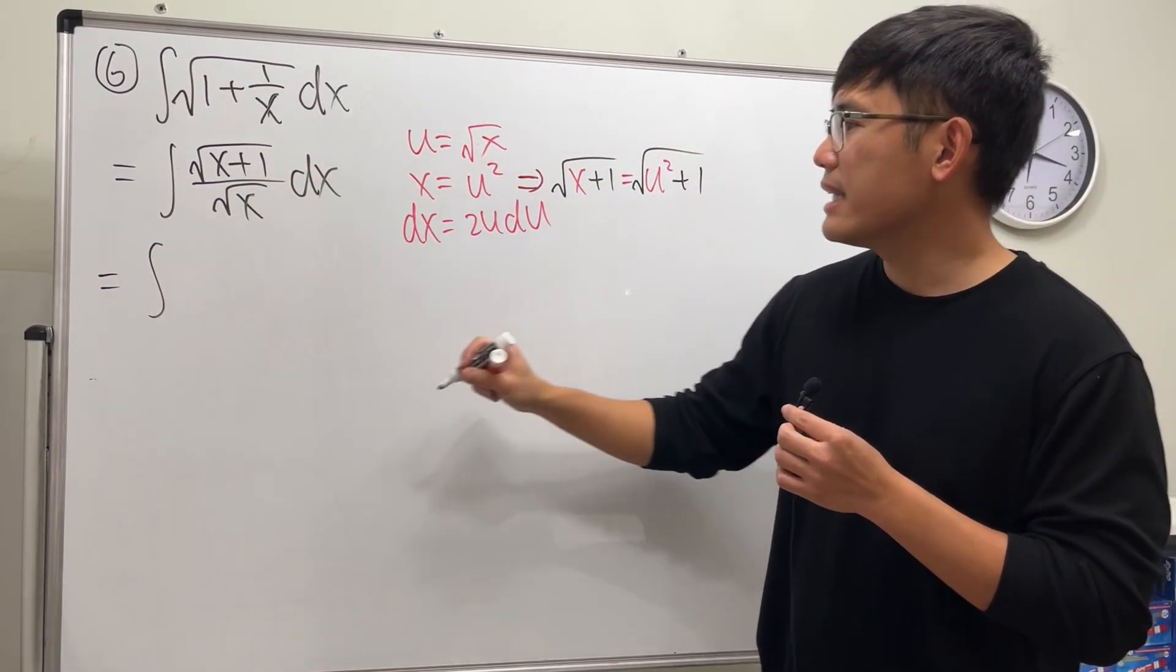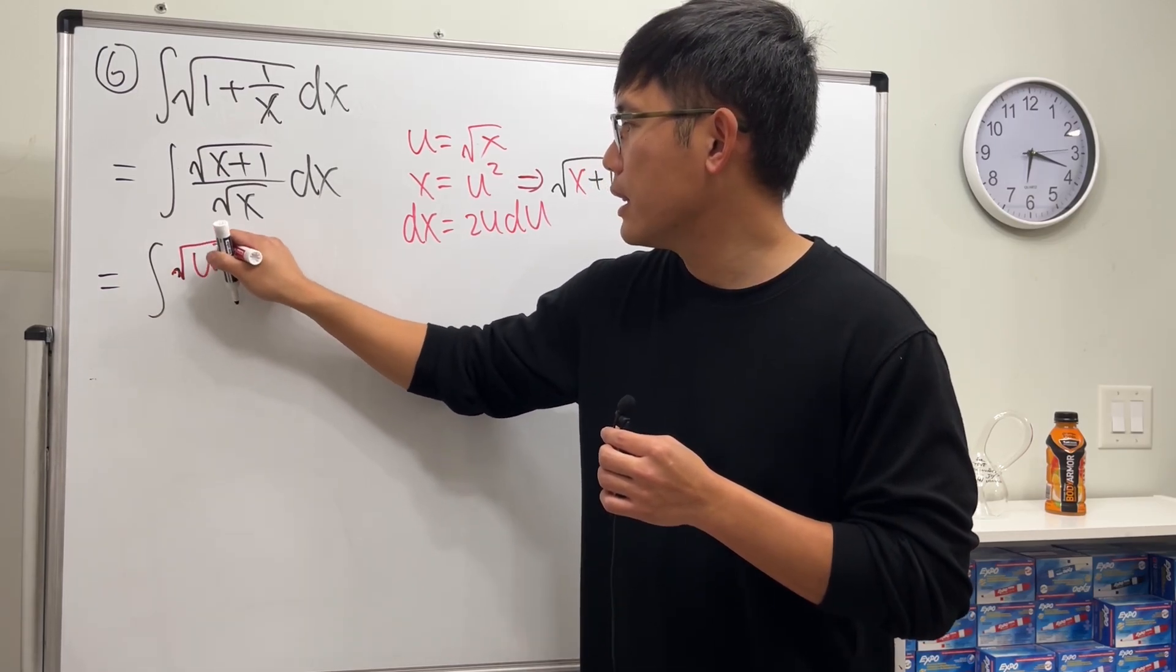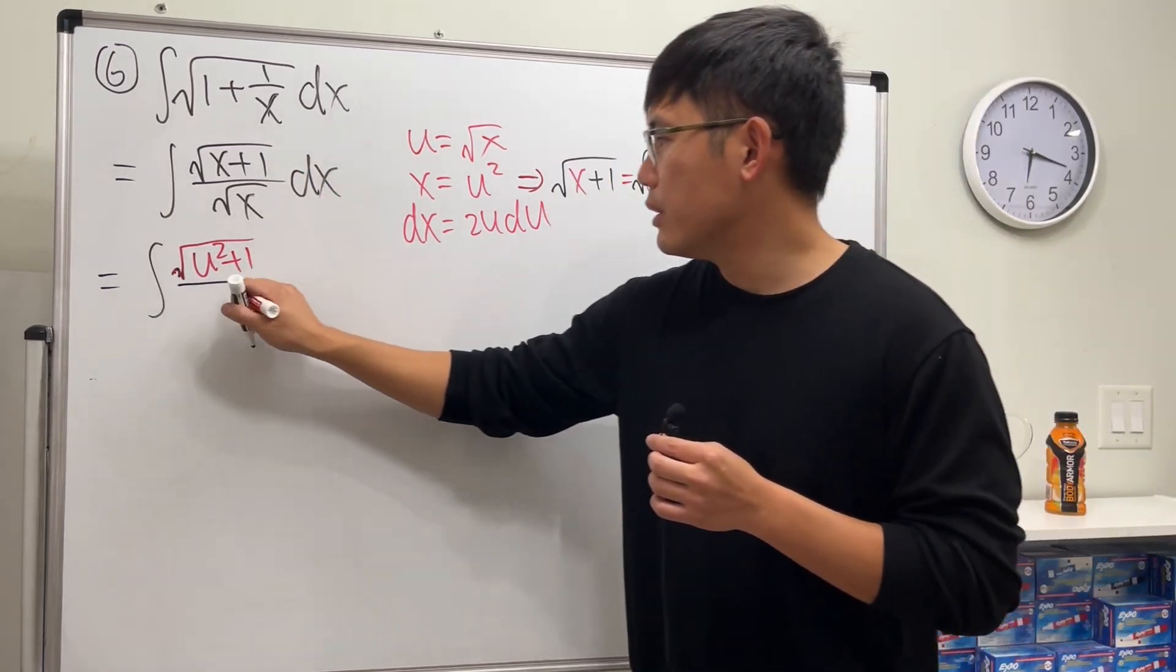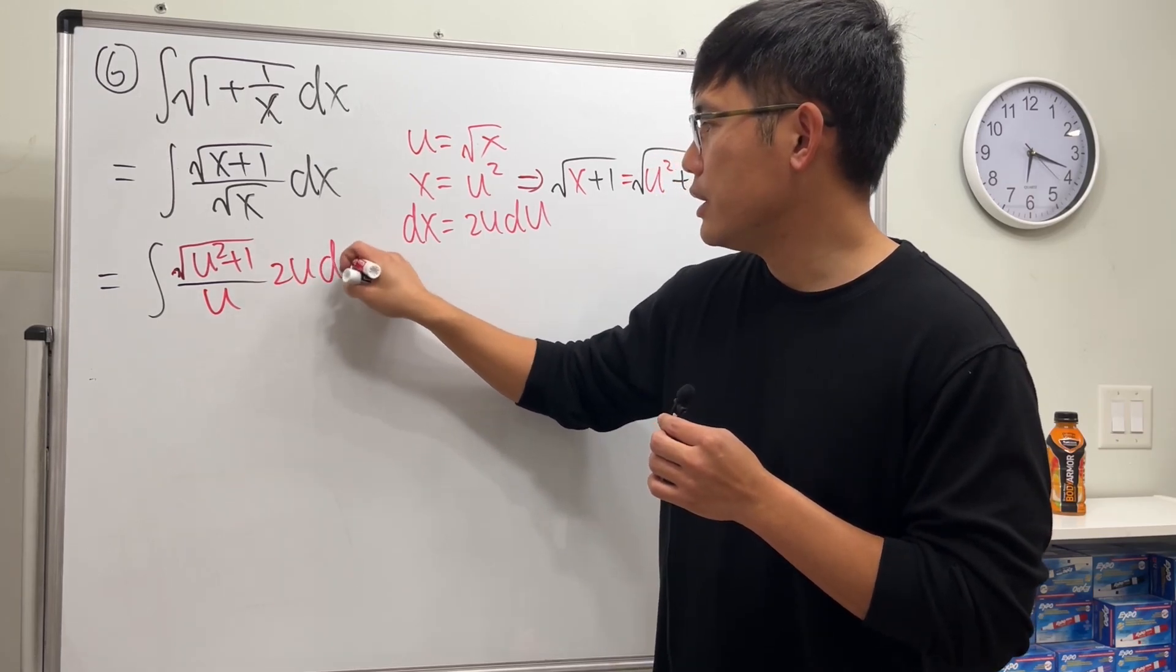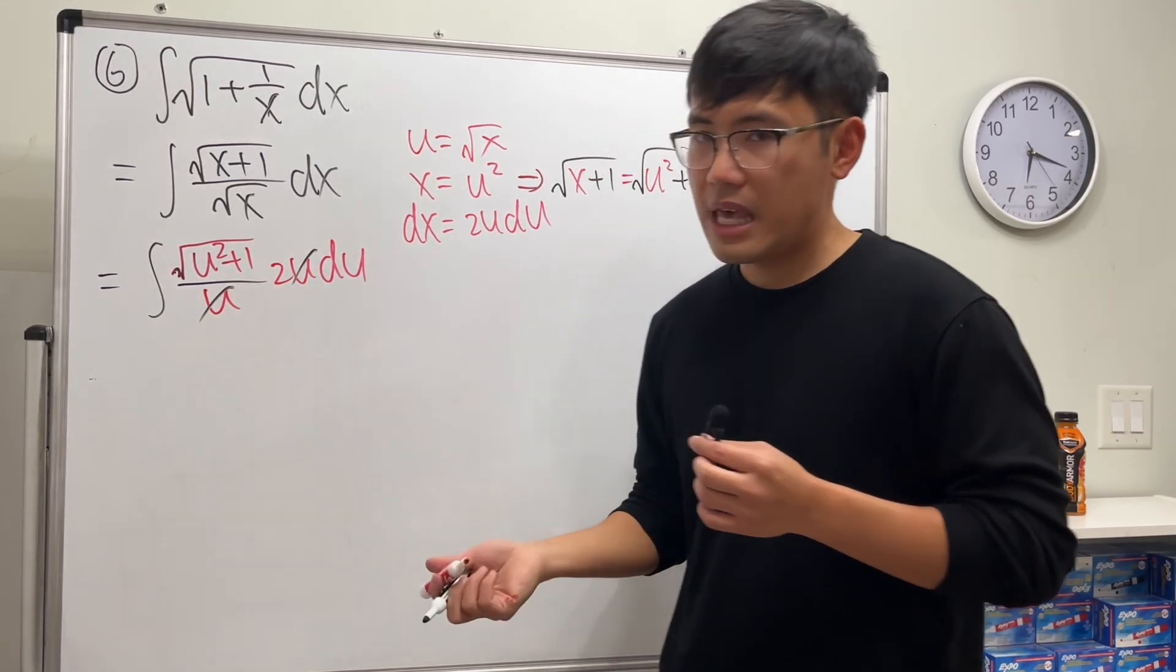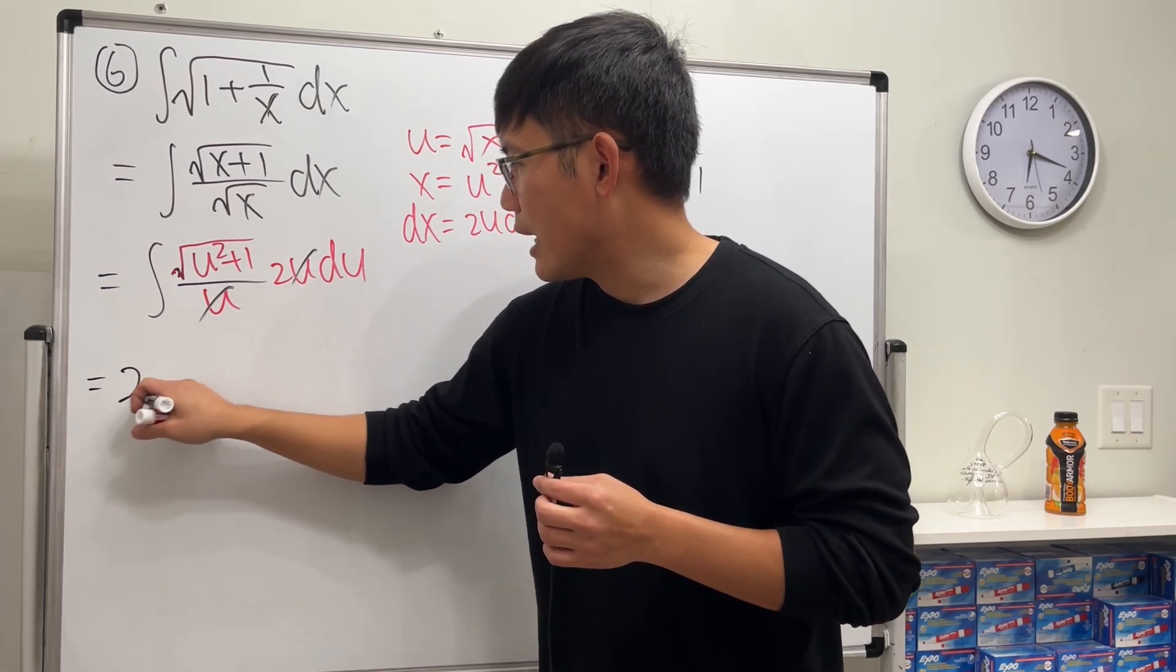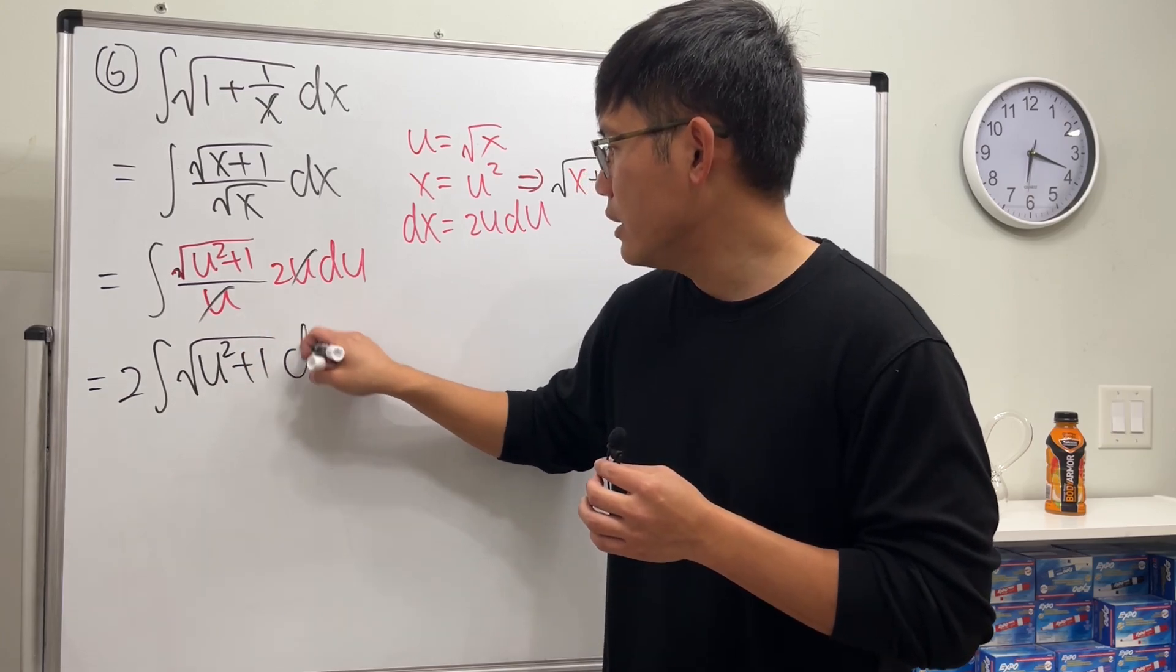Alright, integral. The top is that square root of u squared plus 1. The bottom square root of x is our u. And then dx is 2u du. This and that cancel. Pretty nice. And we are looking at 2 times the integral of square root of u squared plus 1 in the u world.